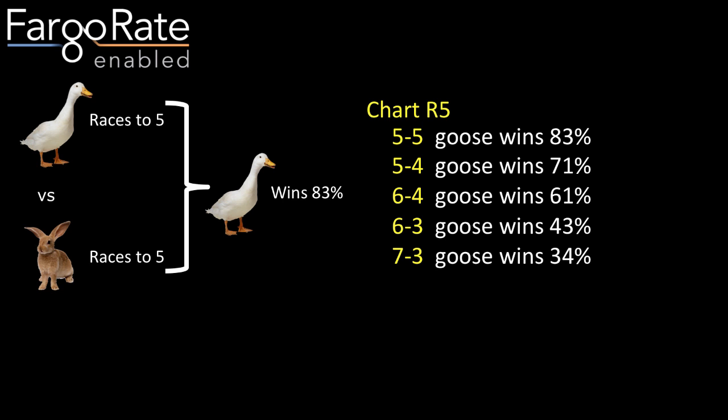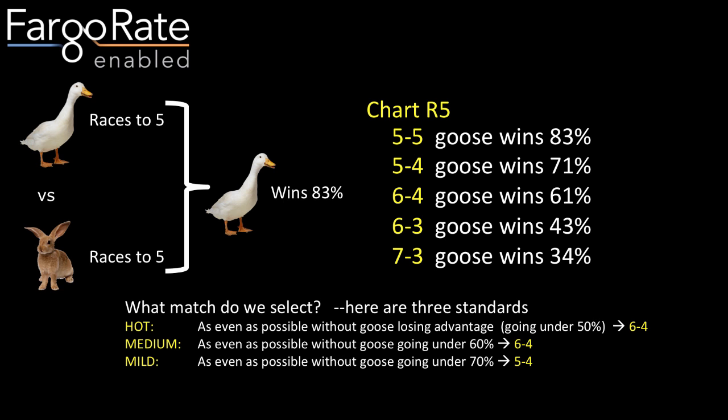With a hot handicap, we pick six-to-four because that is the most weight possible without shifting the advantage to the lower-rated player — it's the one where the Rabbit has as big a chance as possible without actually having an advantage. Hot means selecting the match as close to 50-50 as possible without the higher-rated player, the Goose, going under a 50% chance to win, leading to a six-to-four matchup. Medium handicaps means as even as possible without the Goose going under 60%. Mild handicaps means as even as possible without the Goose going under 70% — you'll never award weight to the Rabbit giving the Rabbit greater than a 30% chance of winning.